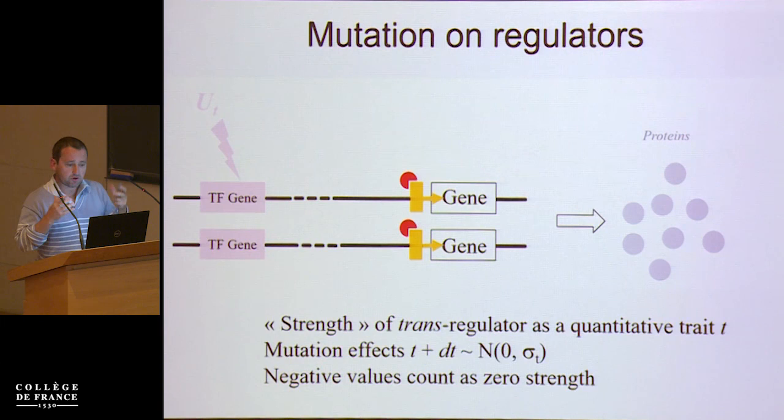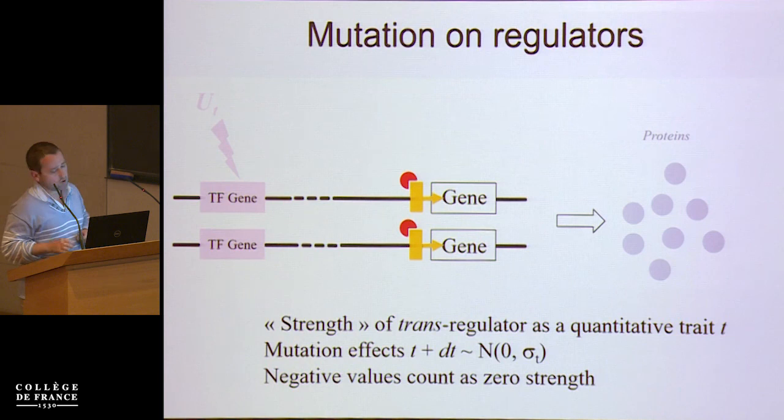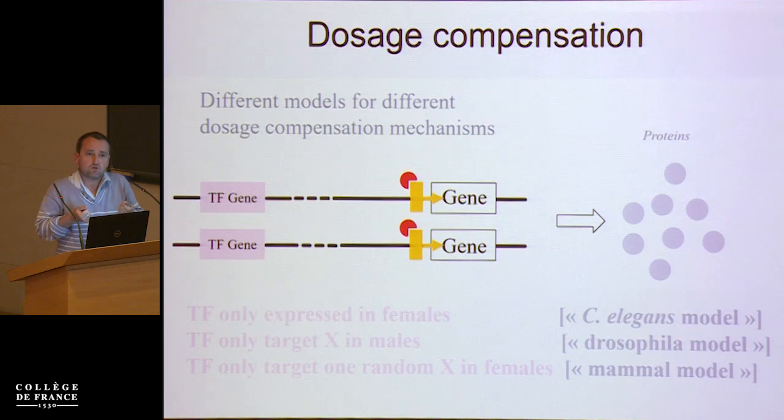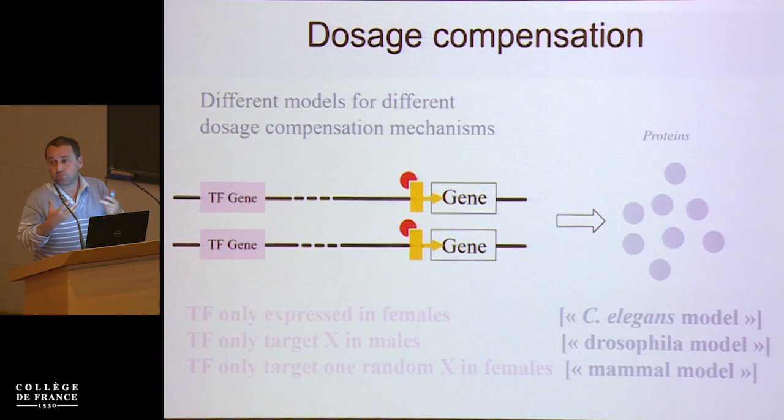Now you've got mutation on the trans regulator as well. Again, here you consider a quantitative trait T that mutates with a normal deviate, and you keep it positive as well. The difficulty is that this trans regulator is here to model dosage compensation. So there are various possibilities according to the different ways you can observe dosage compensation in nature.